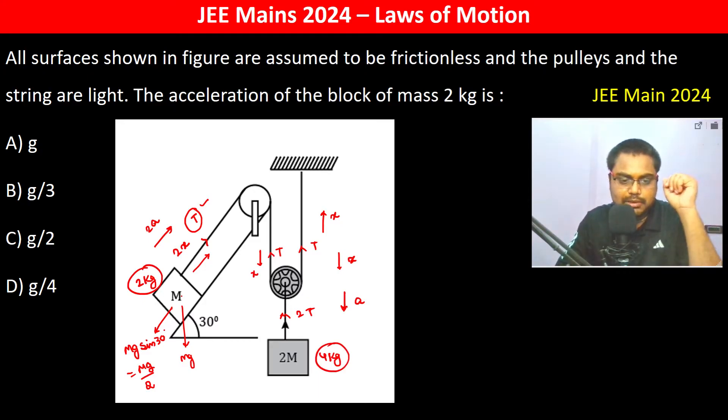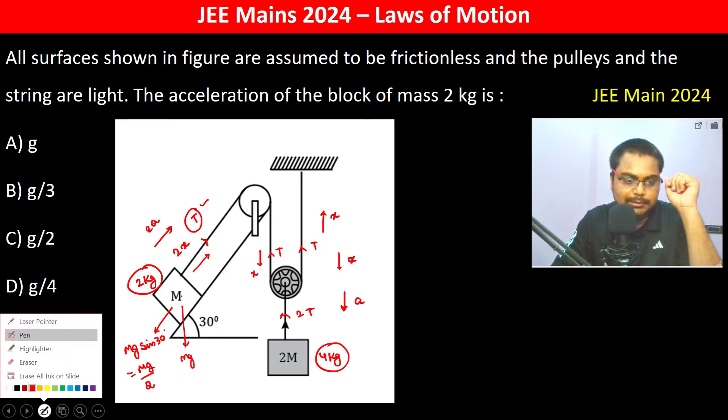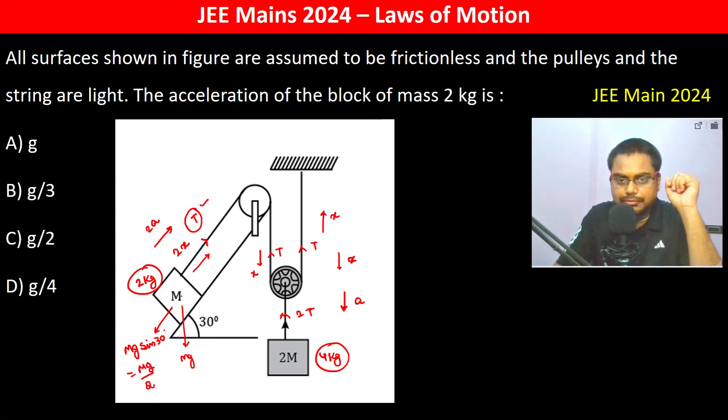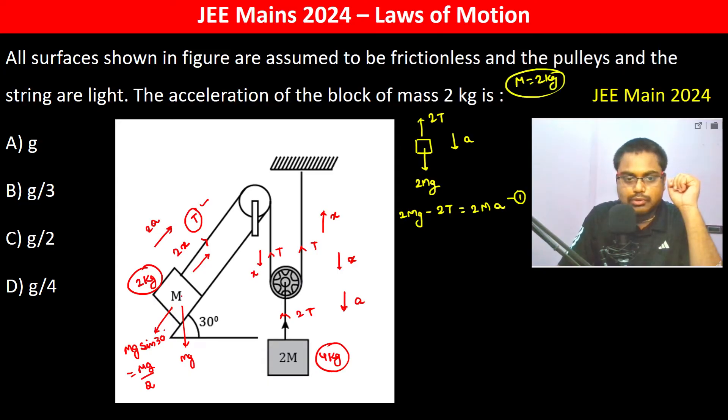Now we will solve this entire thing. Free body diagram of 2m: this is 2mg, it's 2T, and it's going down with acceleration a. So therefore 2mg minus 2T is equal to 2ma. This is first equation. m is anyway 2 kg so therefore we have 2 and 4 here.